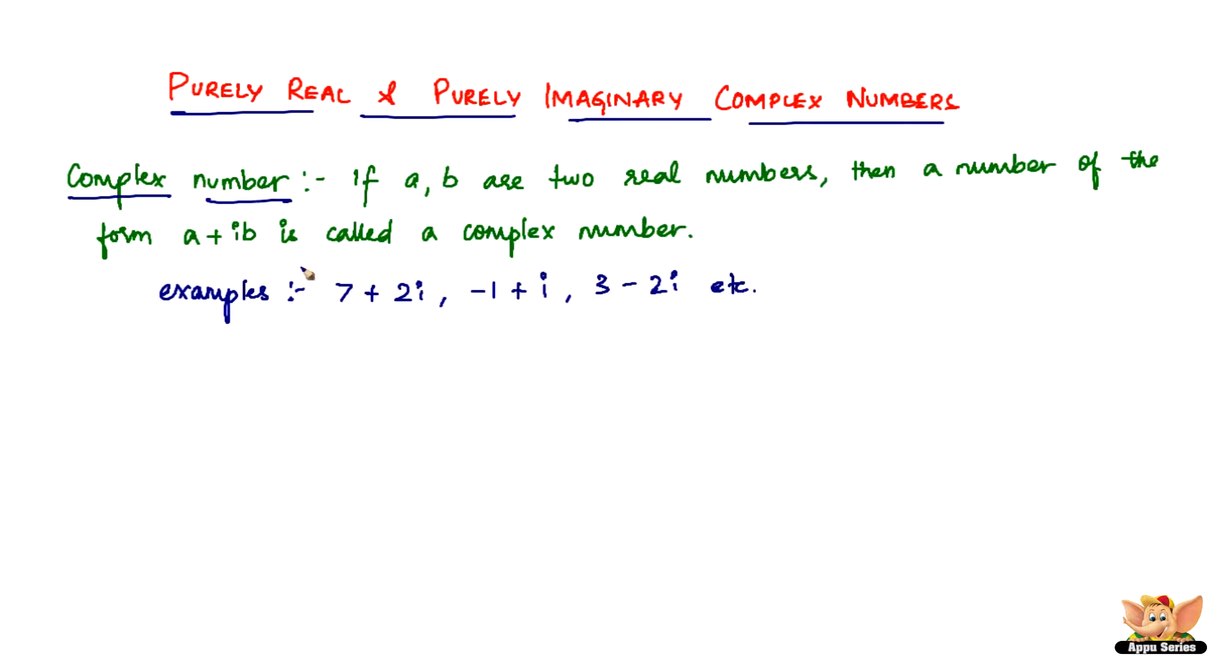Now, how is this related to purely real and purely imaginary complex numbers? So now, if you look at this example, let's take this example, say 7 plus 2i. Now, if you look at this example, 7 is nothing but the real part of the complex number and 2i is nothing but the imaginary part of the complex number.